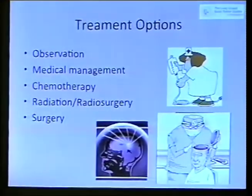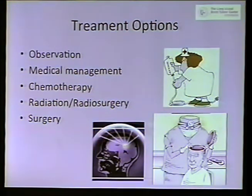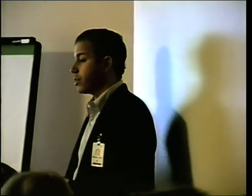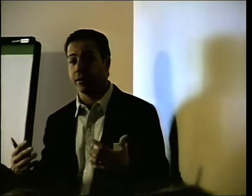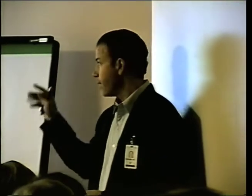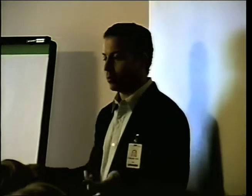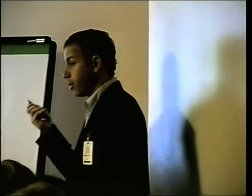Medical management is another option. Prolactinomas can be treated with bromocriptine or cabergoline — they'll actually shrink. Acromegaly and Cushing syndrome can also be treated with medication initially. Metastases and plasmacytomas can often be treated with chemotherapy. One advantage in this region is that it's outside the blood-brain barrier — the pituitary gland and skull lesions don't require chemotherapy to cross that protective barrier — so chemotherapy is often more effective here.